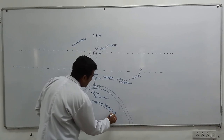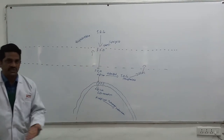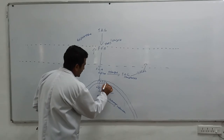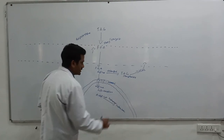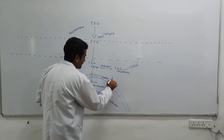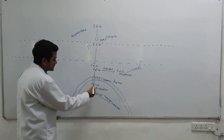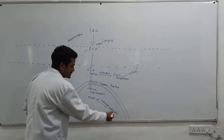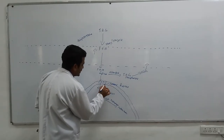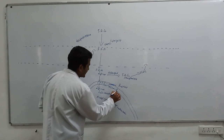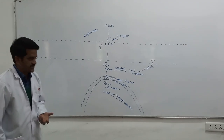In the fasting state, CPT-1 levels are increased. Increased levels of CPT-1 in the fasting state means more acyl-CoA enters the mitochondria, more acyl-CoA is oxidized, and ketogenesis is enhanced. In the fed state, CPT-1 levels are very low, so ketone bodies are very less synthesized.